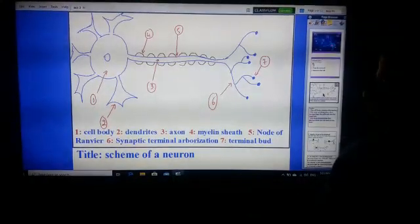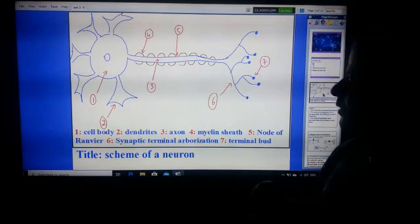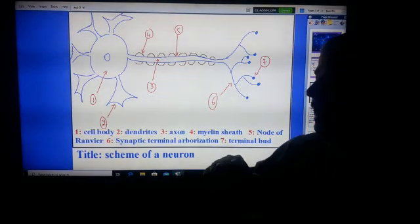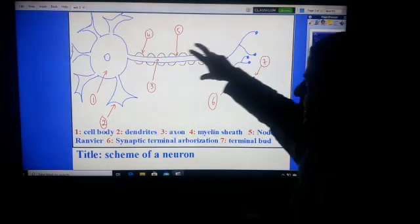As-salamu alaykum and hello everybody. In this video we talk about the organization of a nerve cell. A nerve cell is called a neuron. It is not round like most cells but it is elongated.